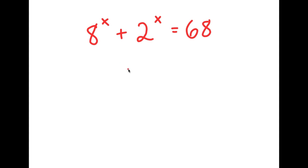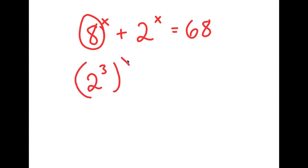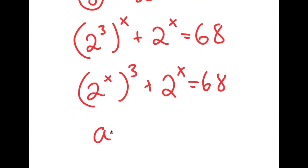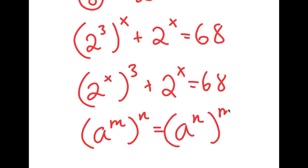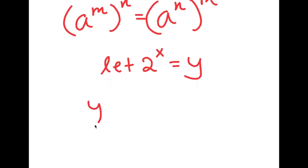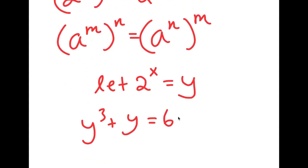In this problem, I have 8 to the power of x plus 2 to the power of x is equal to 68. I'm going to first rewrite 8 as 2 to the power of 3, so I get 2 to the power of 3 to the power of x plus 2 to the power of x equals 68. I'll rewrite 2 to the power of 3x as 2 to the power of x, all to the power of 3, using the rule a^(m^n) = a^(n^m). Then I let y equal 2 to the power of x, giving me y cubed plus y equals 68.